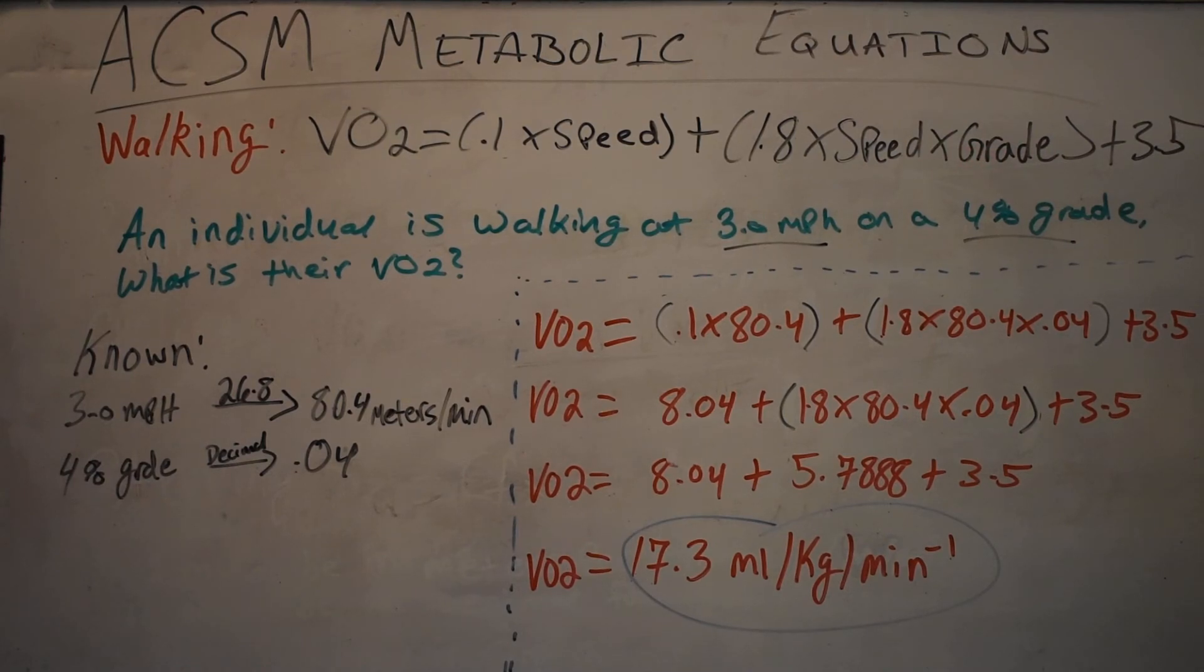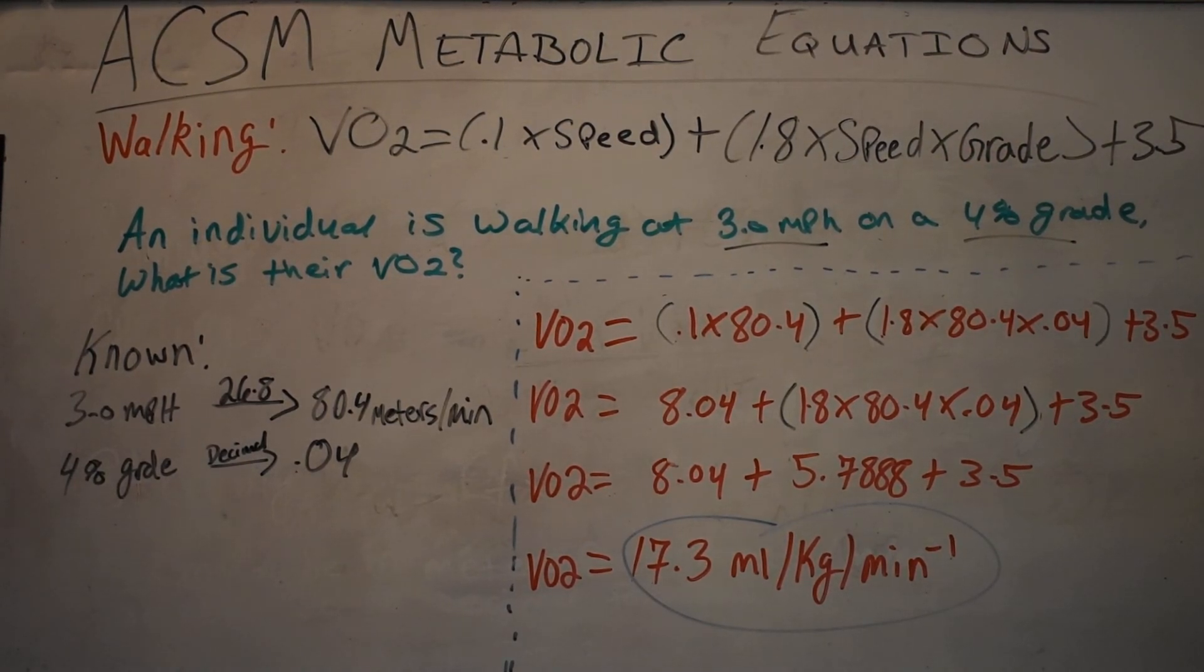And your grade must always be in a decimal. So take whatever your grade is, if it's 4, divide that by 100, it'll give you 0.04. If it's 12, it would be 0.12. You simply move the decimal place over two to the left.